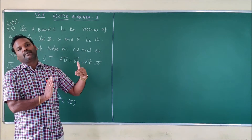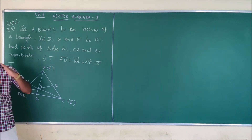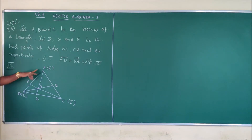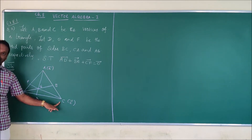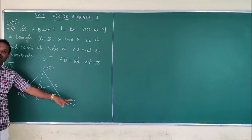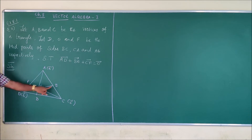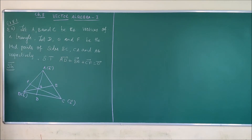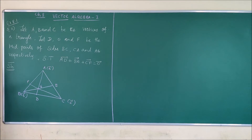The method I have used here may differ from the notes I sent to you, but both are correct, no problem. Let me start the proof. I have drawn triangle ABC, so that the position vector of vertex A is vector a, B is vector b, and C is vector c. D, E, F are the midpoints of the sides BC, CA and AB respectively. I am going to make use of the position vector concept.